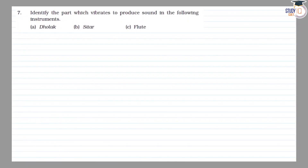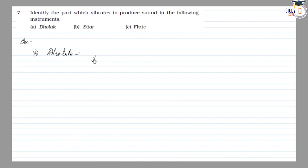Class 8 NCERT Chapter 13, Question 7: Identify the parts that vibrate to produce sound in the following instruments. Part A is Tholak (Dholak). It consists of a head which is a stretched membrane.